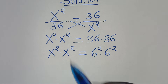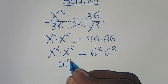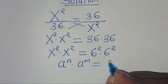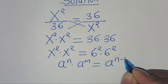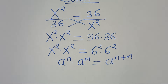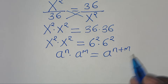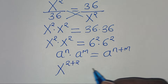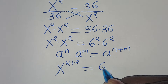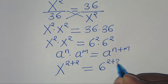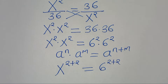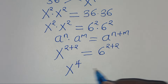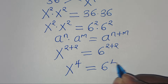Now, this is in the form of a to the power of n multiplied by a to the power of m, which we can express as a to the power of n plus m. Applying this property, we have x to the power of 2 plus 2, this is equal to 6 to the power of 2 plus 2. And this implies we have x to the power of 4, this is equal to 6 to the power of 4.